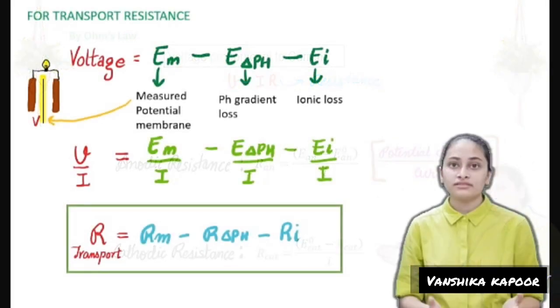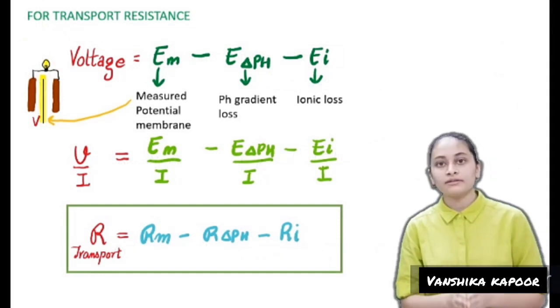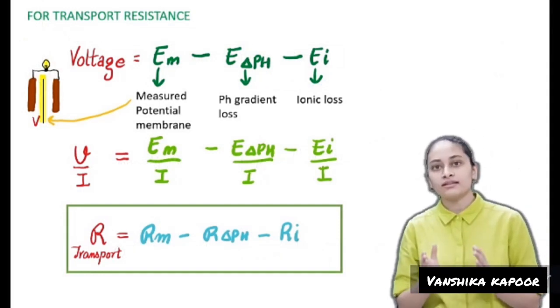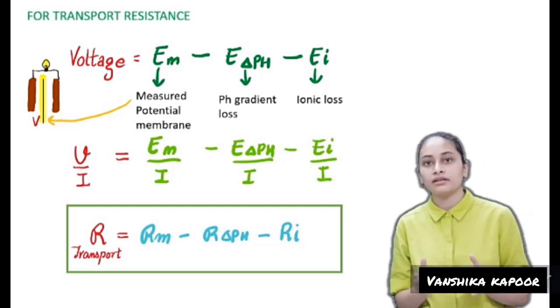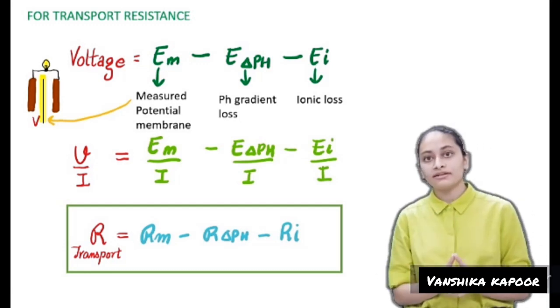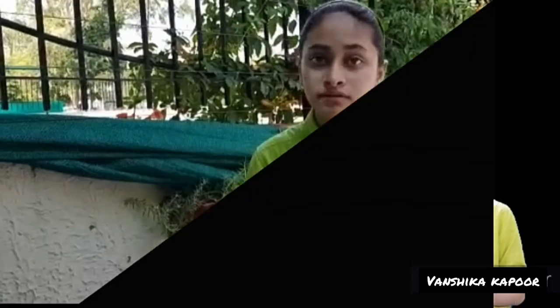For the transport resistance, the total voltage can be calculated by subtracting the pH gradient loss and the ionic loss from measured potential membrane. The resistance can be calculated by dividing it by current. Another problem is pH difference between the electrodes.